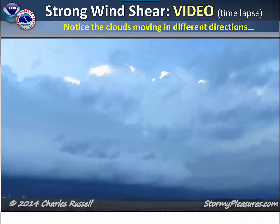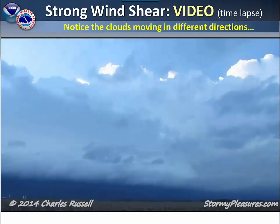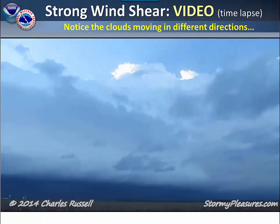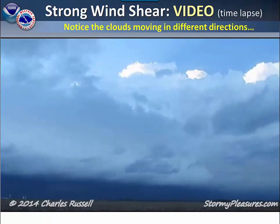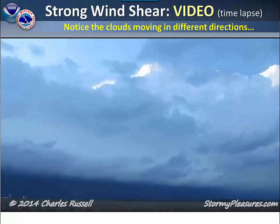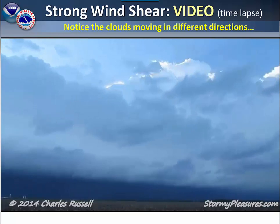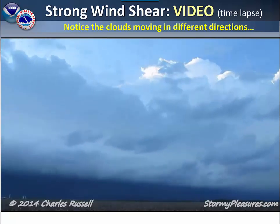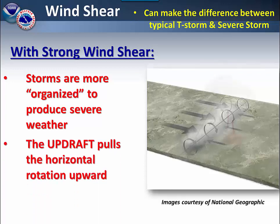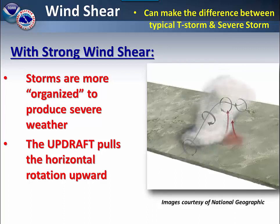Here is an example of how wind shear appears in the clouds. In this particular example, you can see the lower level clouds moving into the screen, while higher level clouds are moving from left to right. When you have strong wind shear, storms are more organized to produce severe weather.